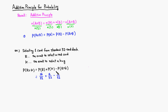Adding these up gives 28 over 52. We can simplify by dividing: 28/52 reduces to 14/26, then to 7/13. So the probability of getting either a red card or a king is 7 out of 13.